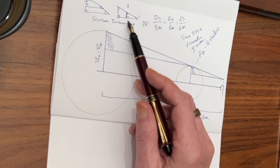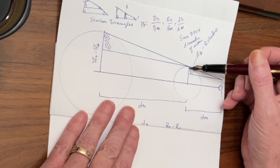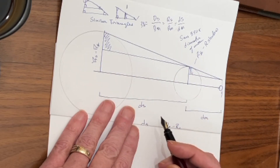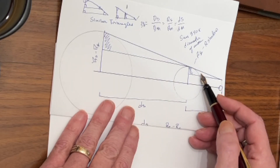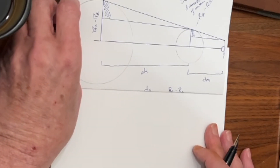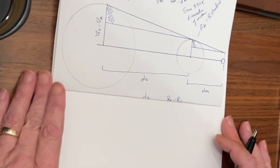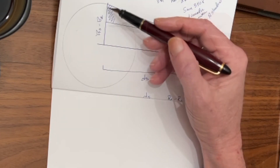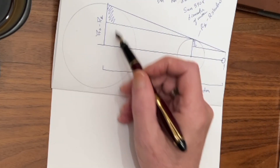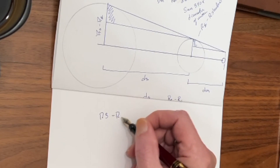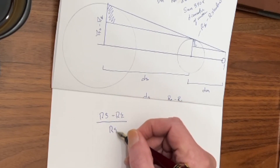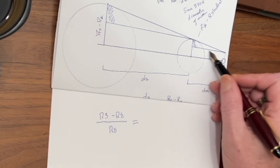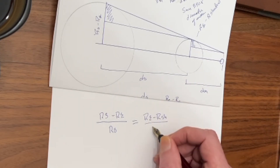Now we have two similar triangles that combine both of these features. We have a similar triangle formed by this perpendicular line here, and then we have similar triangles formed by these parallel lines here. This triangle is similar to that triangle, is similar to the overall triangle. The total distance of this portion of the triangle is the radius of the Sun minus the radius of the Earth. So: radius of the Sun minus radius of the Earth over radius of the Sun equals the radius of the Earth minus the radius of the shadow of the Earth at the level of the Moon, over the radius of the Moon.